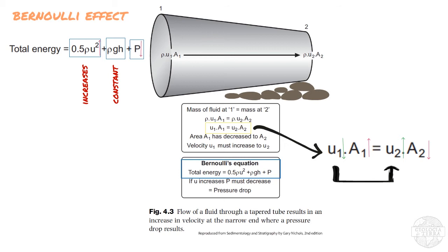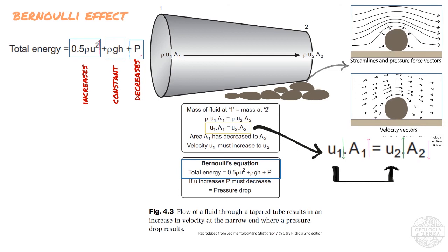Therefore, for us to conserve the total energy, the pressure energy needs to decrease from one to two. Thus the pressure at two will be smaller. This means that above the clast, the velocity will have to increase to maintain a constant transport, which means that the pressure will decrease in this zone due to the Bernoulli effect.